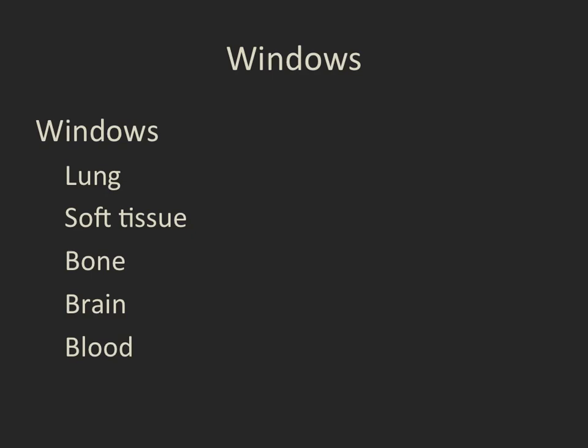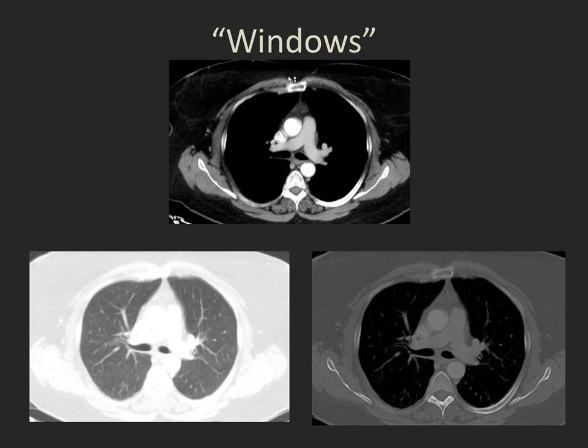To reiterate: reconstructions are done usually by the technologist or by separate software on a different workstation, allowing the raw CT data to be manipulated into different projections or slices depending on our clinical question. The different windows are the different ways that we can visually display the digital information from any set of CT slices. Common windows used are lung windows, soft tissue windows, bone windows, brain windows, and blood windows.